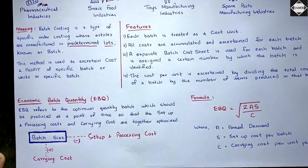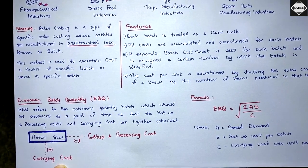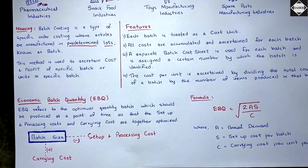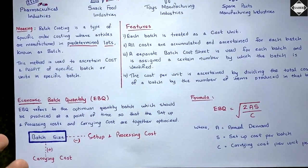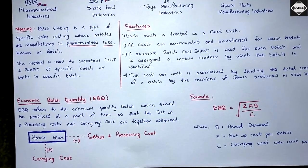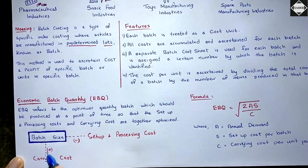Carrying cost is positively related to batch size because if the batch size is large, all units are ready at once and must all be stored together. If batch size is smaller, fewer units are ready at a time and storage is less. This mirrors EOQ logic exactly — order size and carrying cost were positively related, and order size and ordering cost were negatively related. The logic is the same; only the names are different.